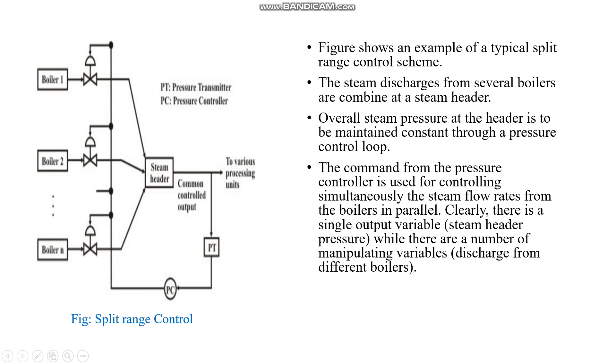There is a single output variable, the steam header pressure, while there are a number of manipulated variables, the discharge from different boilers. The steam pressure gets controlled by taking the control signal from the pressure controller.